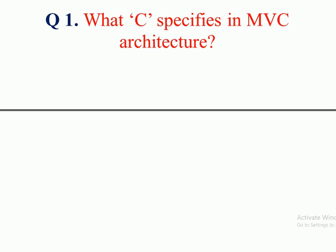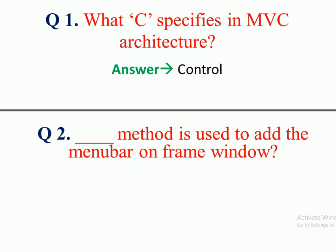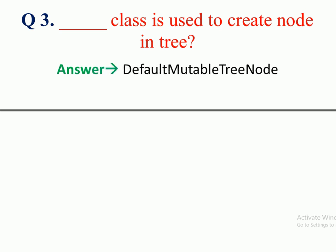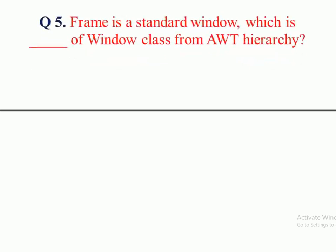Question 1: What does 'C' specify in MVC architecture? Answer: Controller. Question 2: Which method is used to add the menu bar on a frame window? Answer: addMenuBar method. Question 3: Which class is used to create a node in a tree? Answer: DefaultMutableTreeNode. Question 4: To create a multi-line editable control, which class is used? Answer: TextArea.